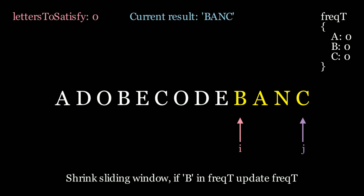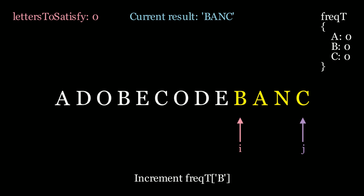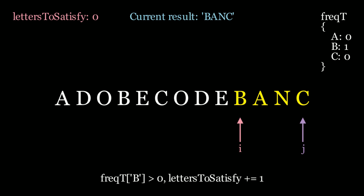Now we need to shrink the window. Is b in the frequency table? It is, so we increment the value. Since it's now positive, we need to update letters to satisfy — increment it by 1. This is no longer a solution. We move i along, and now we're done the algorithm. j goes off the bounds of the string. The minimum substring we found is b, a, and c.